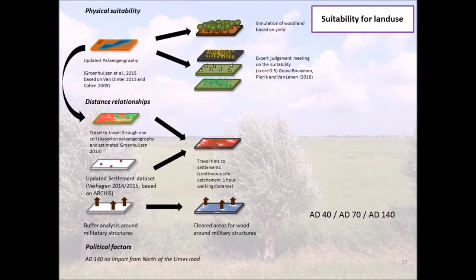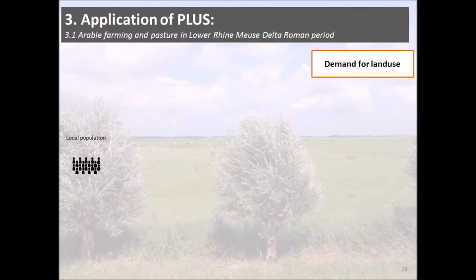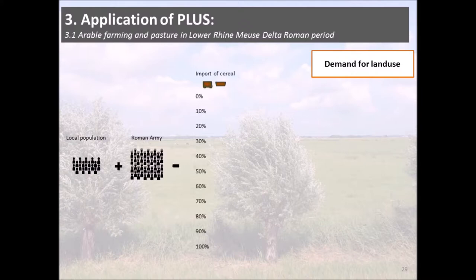We produced these layers for physical suitability and land use suitability for the different time frames. For the demand for land use, we looked at the local population, the Roman army — how much cereal and wood they needed for fuel and timber — and especially the import of cereal, varying it in steps of 10%: from 0% import, 10%, 20%, up to 100%.